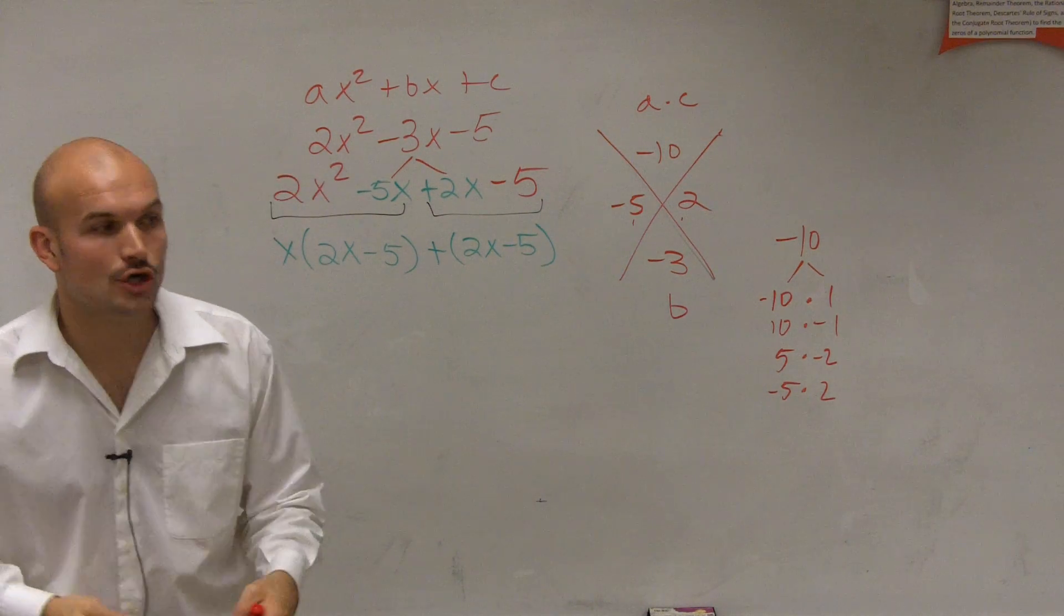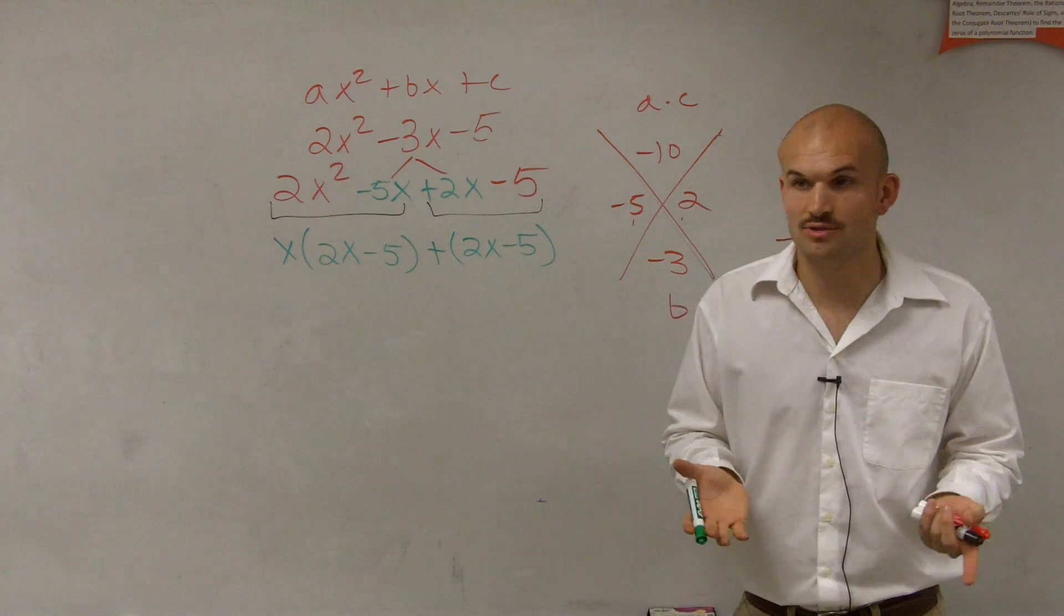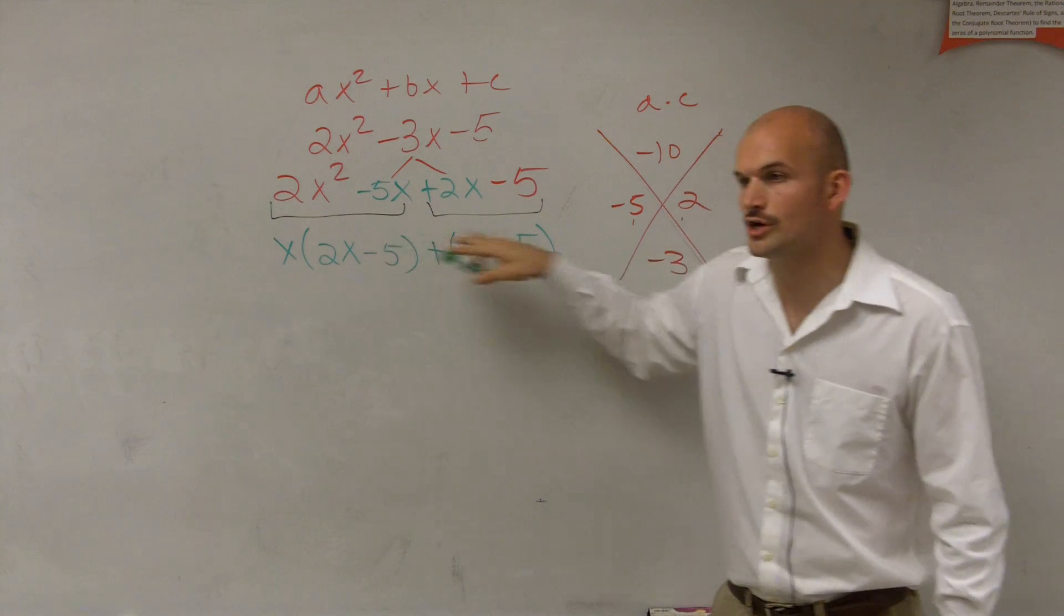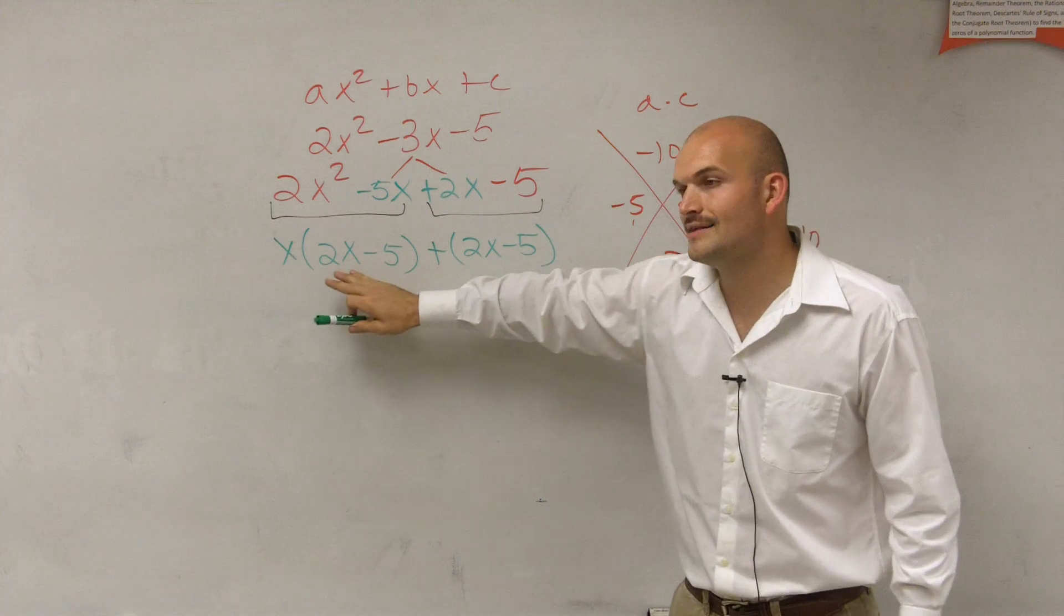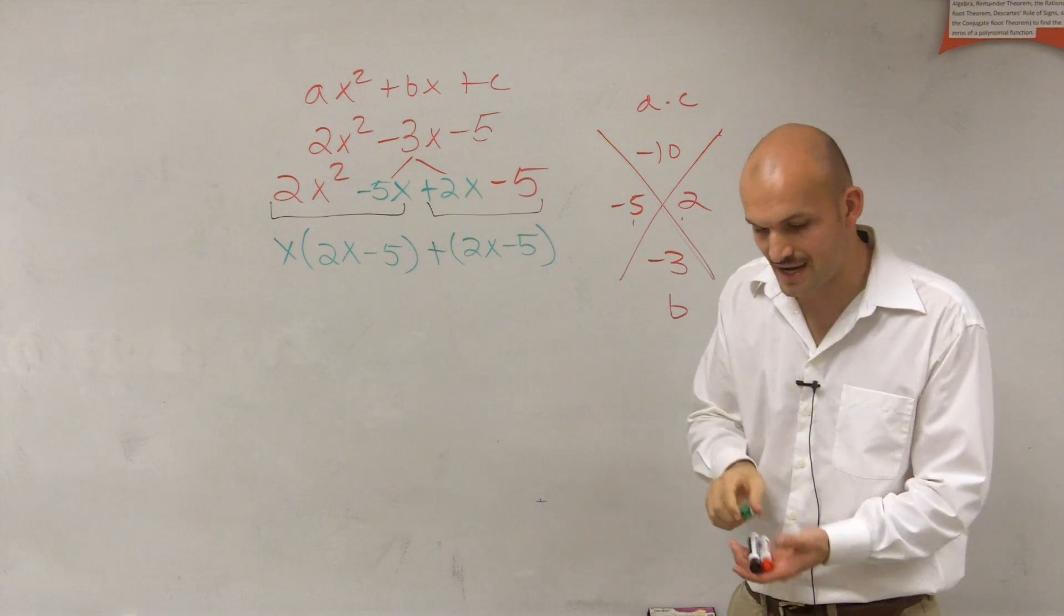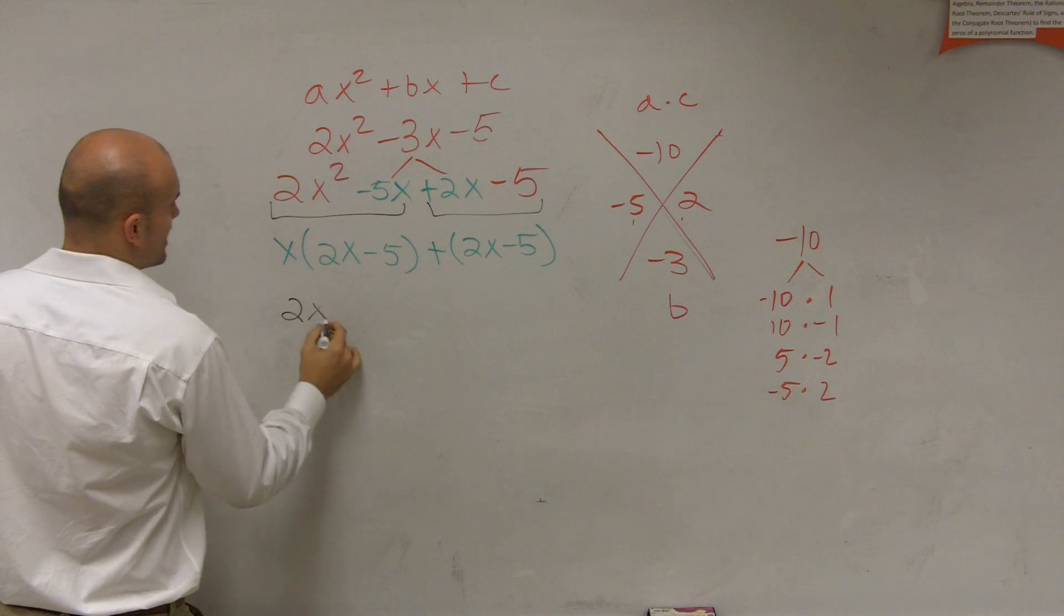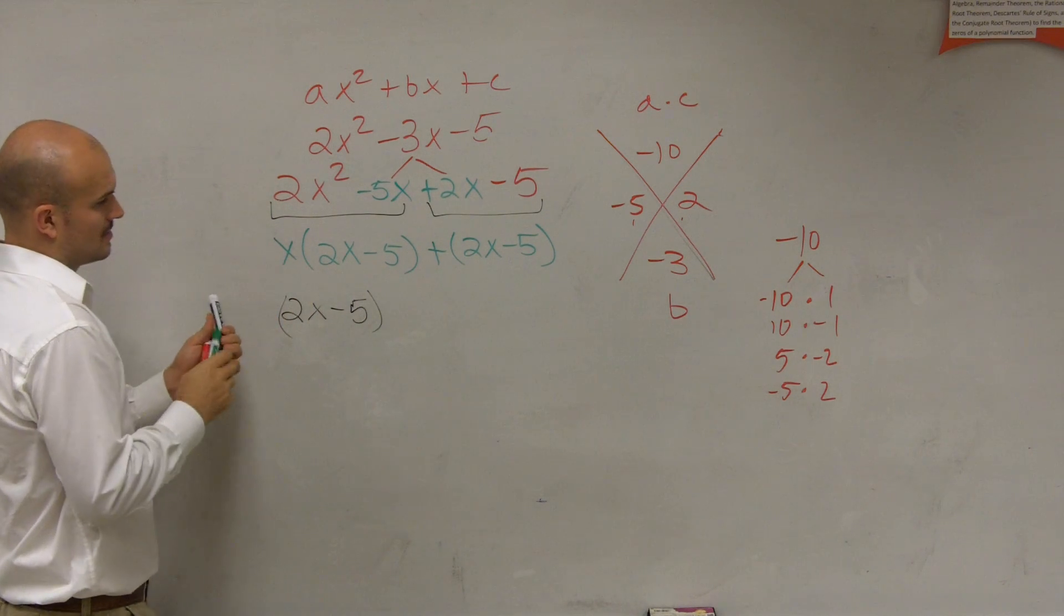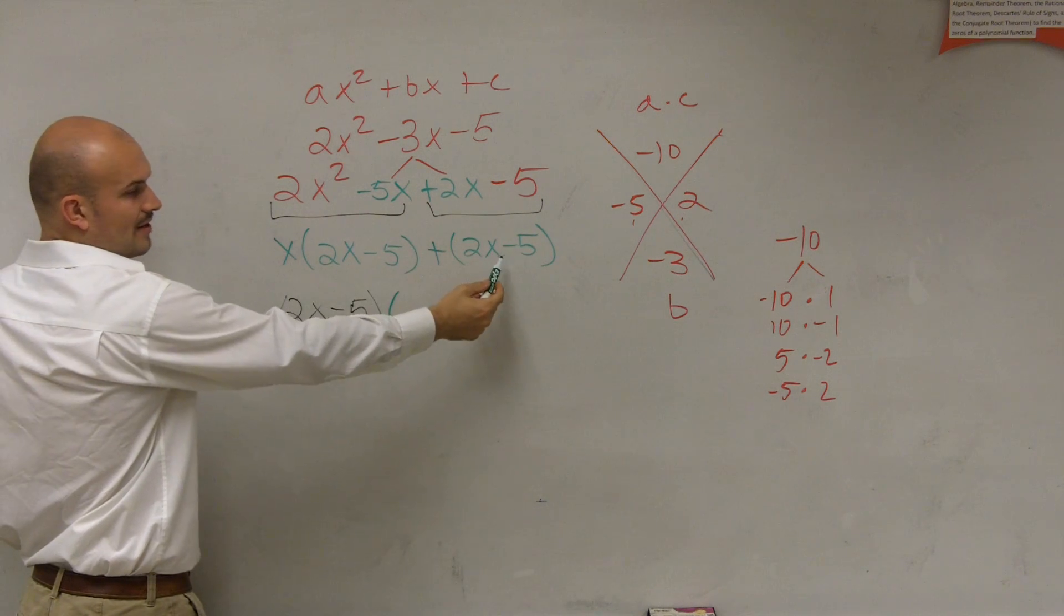Now, remember, ladies and gentlemen, terms are when you have variables or numbers multiplied by each other or divided. So what I have is I have two terms. Terms are separated by addition and subtraction. So out of these two terms, is there something that they have in common? Yeah, the 2x minus 5. So what we're going to do is now we're going to factor that out. So when I factor out a 2x minus 5, I'm left with an x, and then what happens? If I factor this out, what's still there?